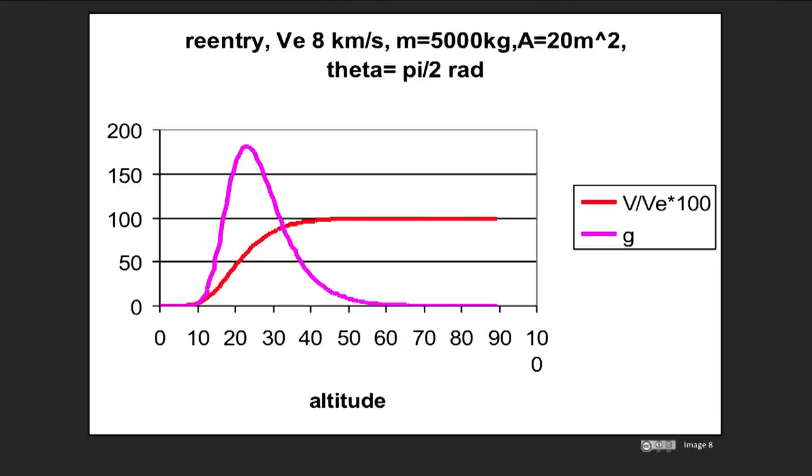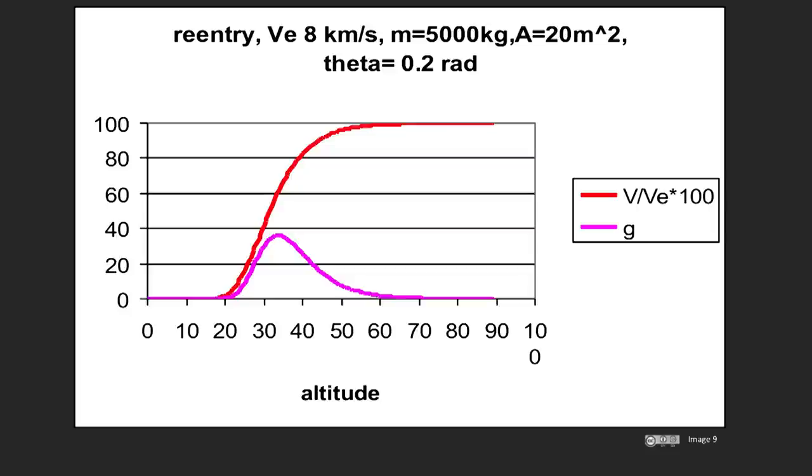If you've been out in space you want to get home in a hurry, so obviously the quickest way down is straight vertically down. So what happens if you do that? You put pi by 2, 90 degrees, into your equations and you'll see on that purple line there you get a maximum acceleration of about 180 G. You won't survive. So self-evidently you're not going to be coming straight down. What might be more realistic angle to take? Let's take theta at 0.2 radians.